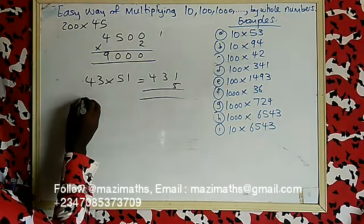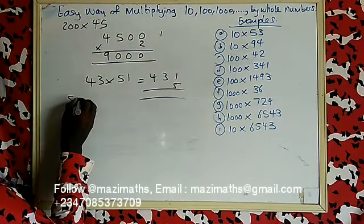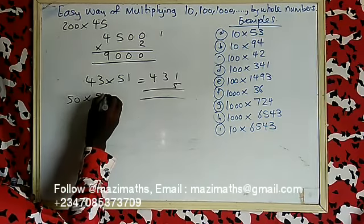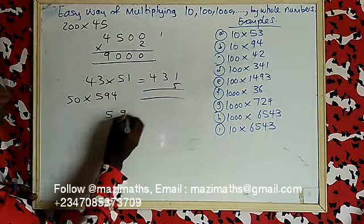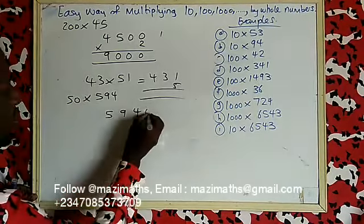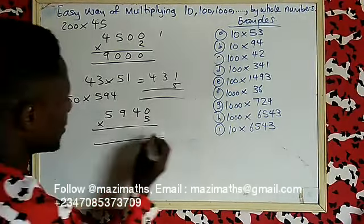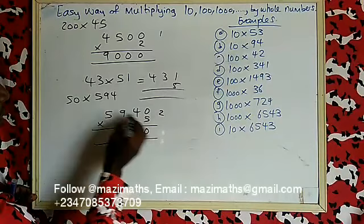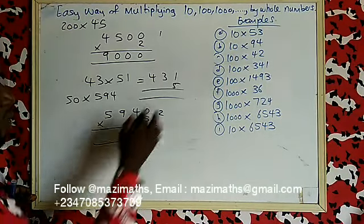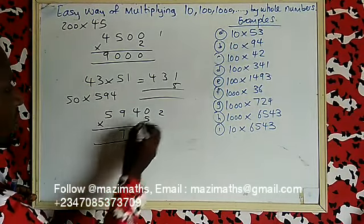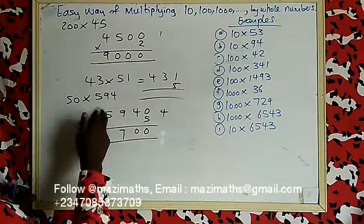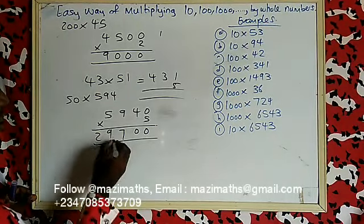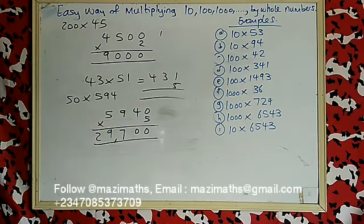For example: 50 times 594. Write 594 first. 50 has one zero — put that zero here, and put 5 here. Multiply: five times zero is zero, five times four is 20 — write zero, keep two. Five times nine is 45, plus two from your bank is 47 — write seven, keep four. Five times five is 25, plus four from your bank gives 29. Your answer is 29700.